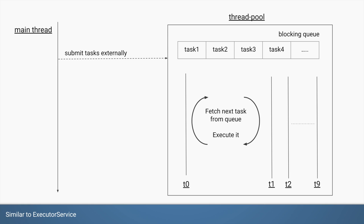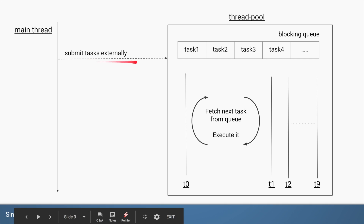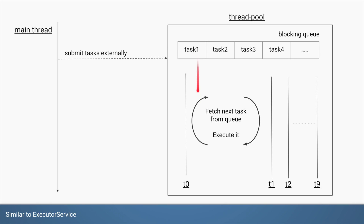Executor service is about having a thread pool which stores the set of tasks that you submit externally, and those tasks are stored in some form of data structure, typically a blocking queue. You have a particular set of threads that take tasks from the blocking queue, execute them, go back to the queue, pick up the next task, and so on, until there are no more tasks. If instead of runnables you're using callables, which is a way to return a value from a task you're submitting to a thread pool, it will return a set of futures.